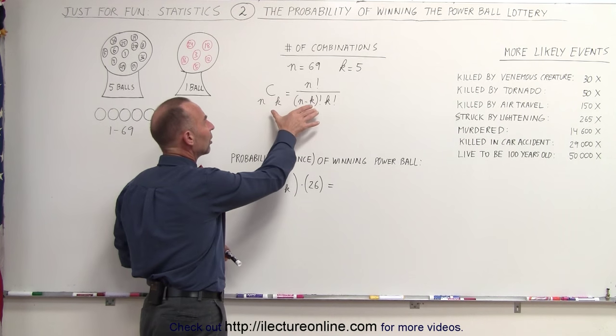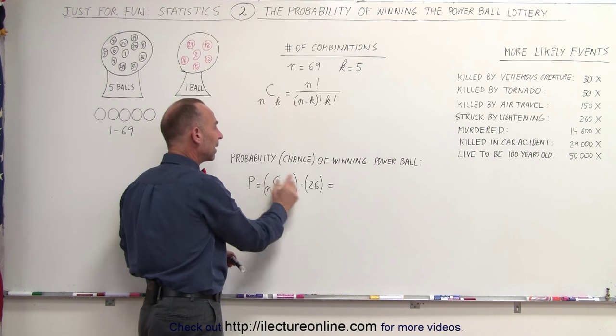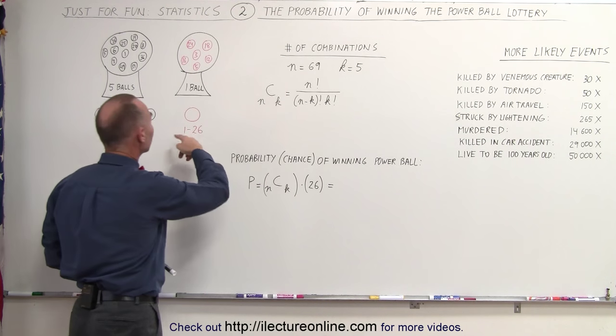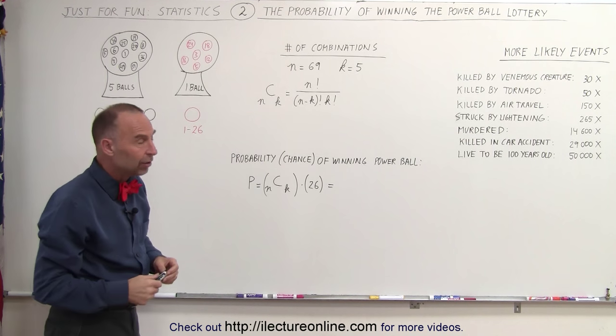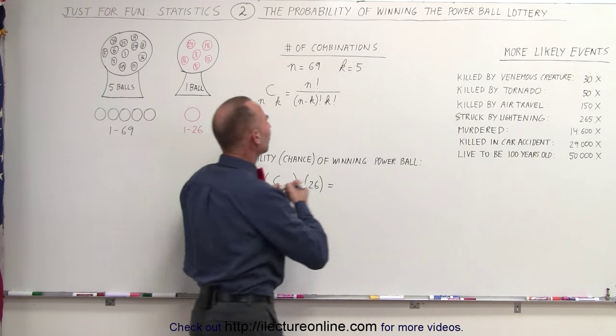Now, of course, that's not the chance to win the lottery. We then have to multiply that times 26, because there's still a possibility of only drawing one of the 26 red balls. So let's plug in the numbers and see what we get.